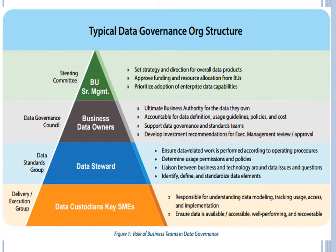Next we have the data standards group, made up of data stewards. Their role is to ensure data-related work is performed according to operating procedures, they determine usage permissions and policies, and they work with the business and technology on data issues. At the bottom of the pyramid is the delivery and execution group, consisting of data custodians or key subject matter experts. These persons are responsible for data modeling, tracking usage, access and implementation, and ensuring data is available, accessible, well-performed, and recoverable. All these stakeholders are absolutely important in delivering data governance.